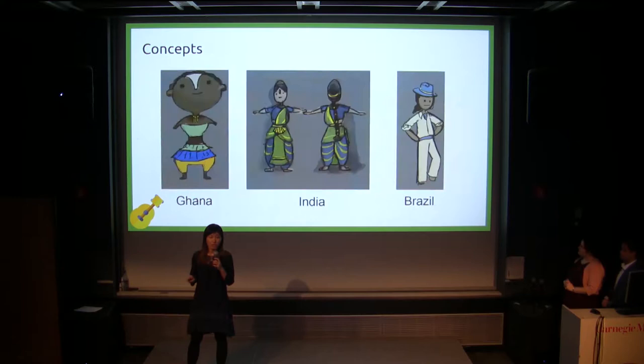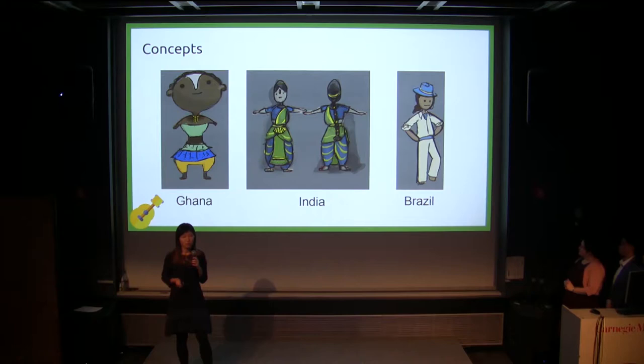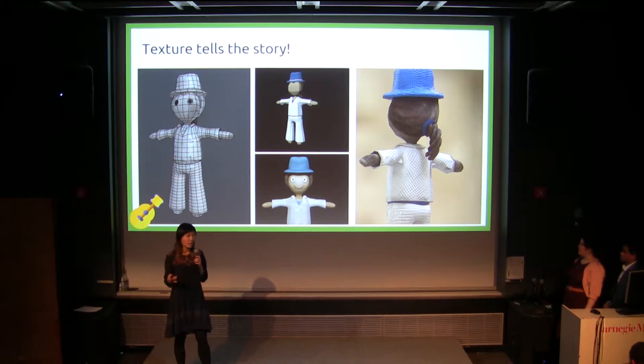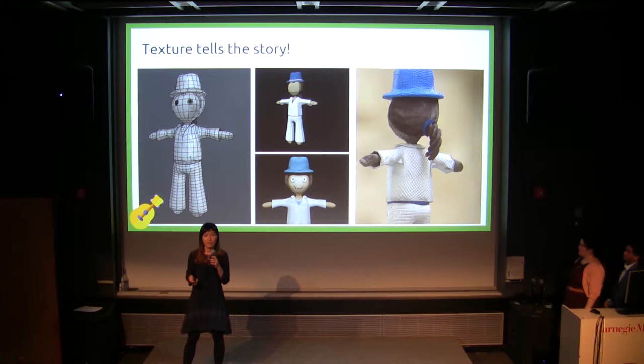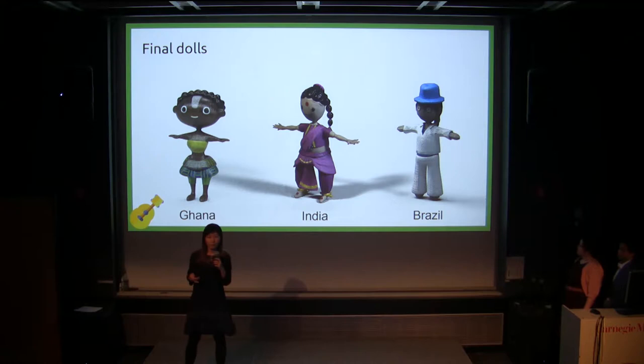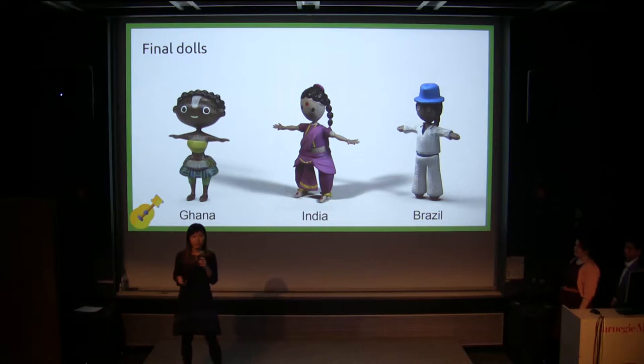So having considered all that, these are the designs we have made for the dolls. And after we modeled them, we soon realized that texturing, in our case, is really the key of storytelling. For example, for the Brazilian doll, we put him a pretty simplistic texture at first, but it doesn't really look like a doll — it looks more like a CG object, which doesn't fit in our story. So we tried putting in some stitches and some buttons in our texture, so it now looks more like a rag doll. We did the same effort on the other two dolls — so now the Ghanaian doll has a wooden texture and the Indian doll has a papier-mâché texture, which reflects the real dolls in their culture.